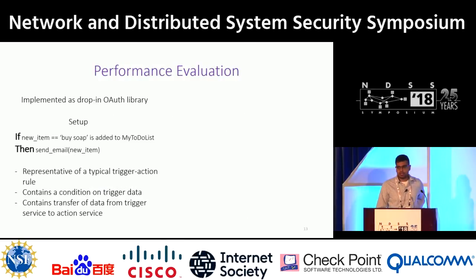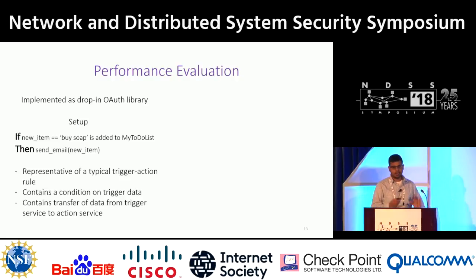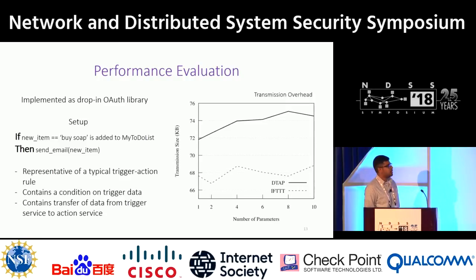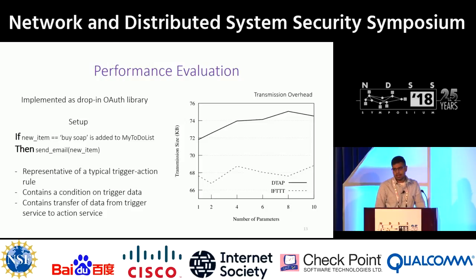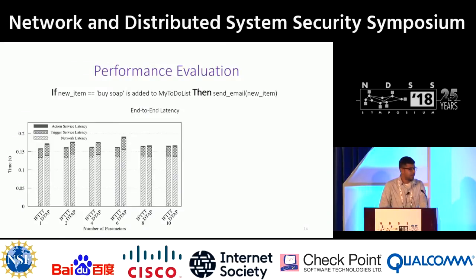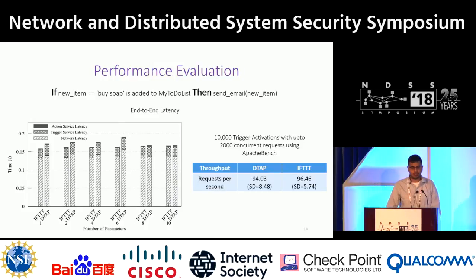We implemented this as a drop-in OAuth library — people who want to use it simply replace a decorator in their Python code with ours and get this functionality. In terms of evaluation, we used a representative rule with various conditions and data transfers. The transmission overhead is minimal — our OAuth tokens are slightly larger, around seven and a half kilobytes. Verification latency is around 15 milliseconds, and although network dominates most of it, practically this translates to a very small reduction in throughput. We ran 10,000 trigger activations at a concurrency level of 2,000, based on our calculations of how the IFTTT platform works.